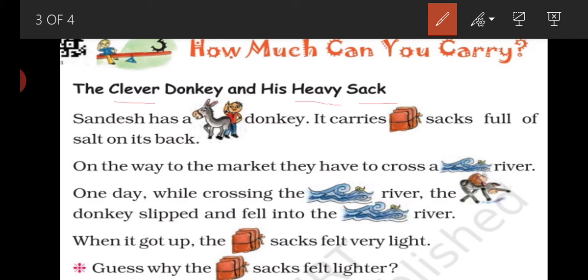Sundesh has a donkey. Sundesh के पास एक donkey था. It carries a sack full of salt on its back. वो नमक के बोरे अपनी पीठ पर गांव से market ले के जाता था. On the way to the market, मार्केट के रास्ते में they have to cross a river. उनको एक नदी को पार करना होता था.